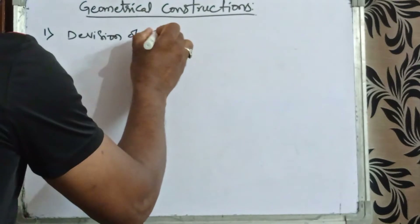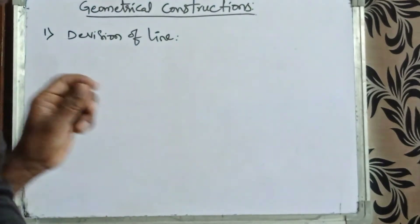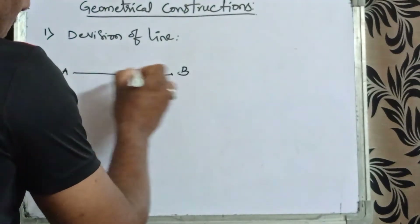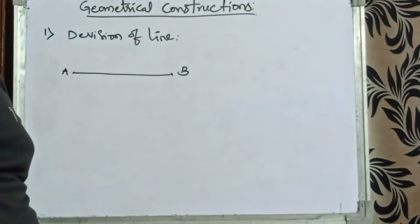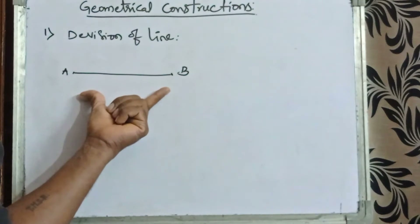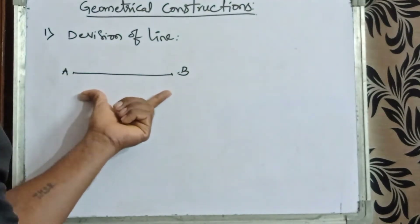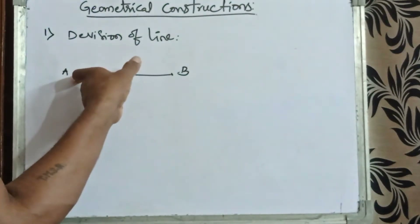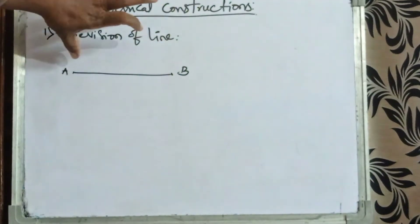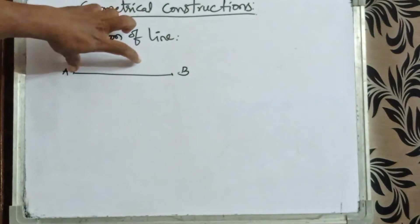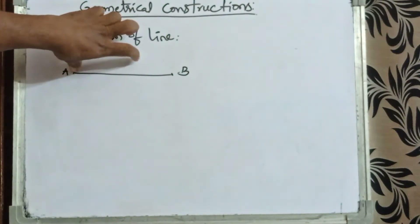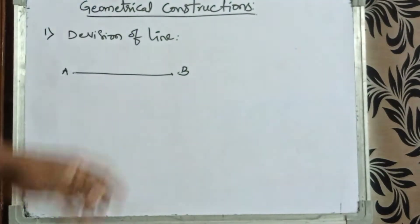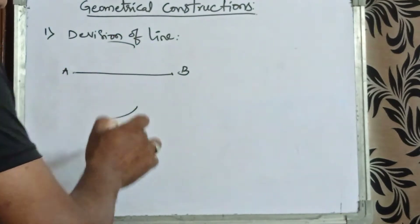For division of a line: a length of the line is there with one end A and other end B. Without using a scale or knowing the length of the line, we can divide this into equal number of parts. With a compass, take more than half as the radius, keep the compass at one end, and draw arcs on both sides of this line.